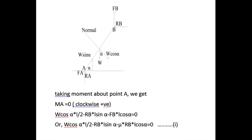Taking moments about A with clockwise moments as positive: W cos alpha acts over the perpendicular length L/2, making a clockwise (positive) moment. RB acts over the perpendicular distance L sin alpha and is negative because it makes an anticlockwise moment. FB is also making an anticlockwise moment at point A, so it is also negative, and FB is multiplied by L cos alpha because FB acts upward at point B and its perpendicular distance from A is L cos alpha.